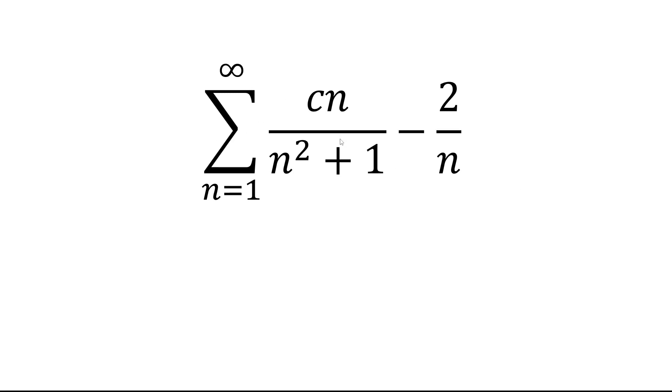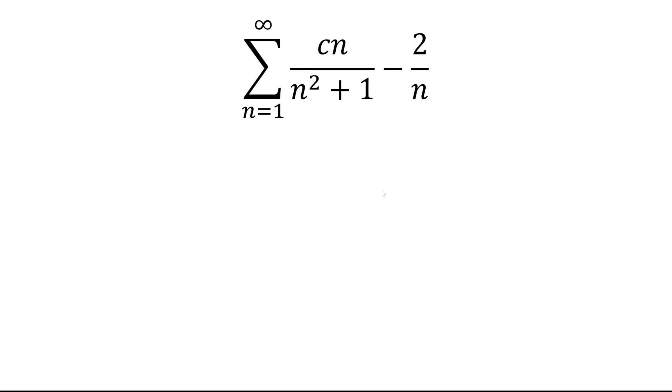We're given the sum from n equals 1 to infinity of cn over n squared plus 1 minus 2 over n. And we want to see what values of c makes this series converge.